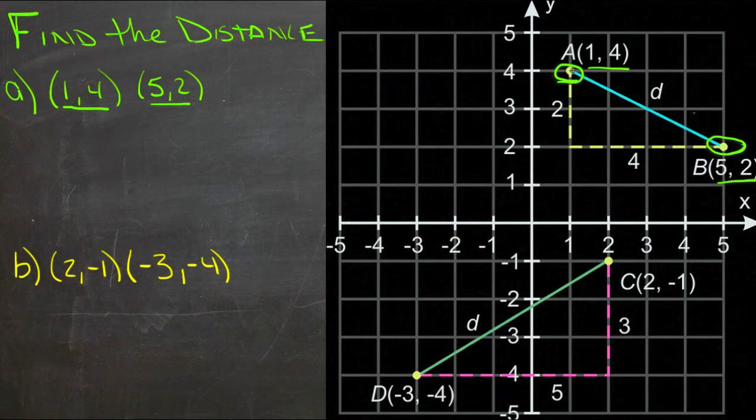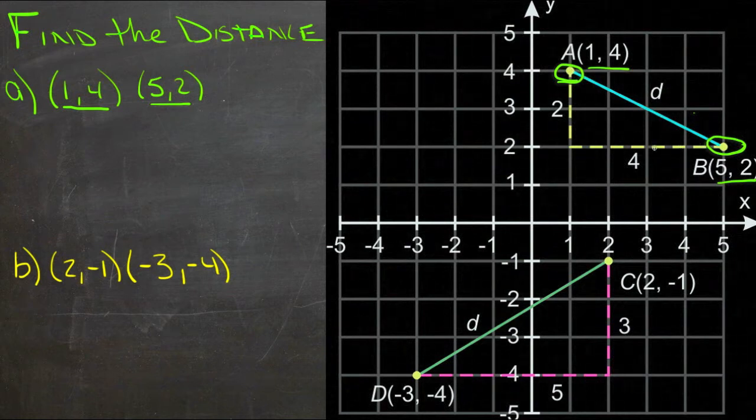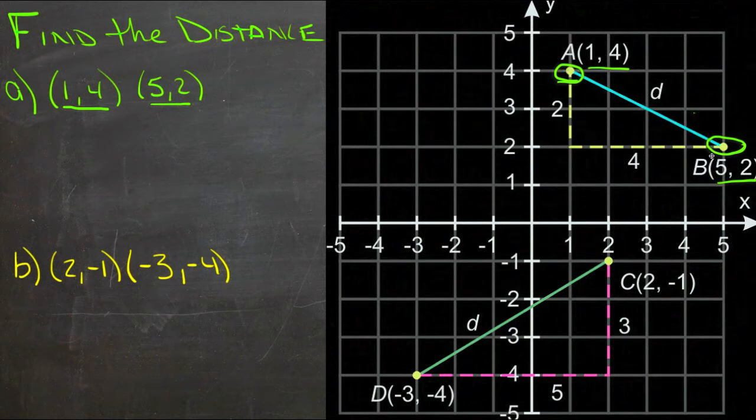And we're looking for the distance, the straight line distance between them. And that would be highlighted here in this kind of teal colored line. So in order to find the distance, we can't just count squares because we're going across a weird diagonal across a number of them.